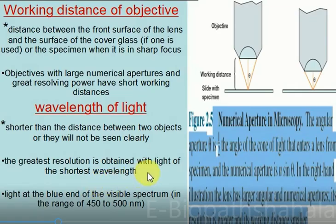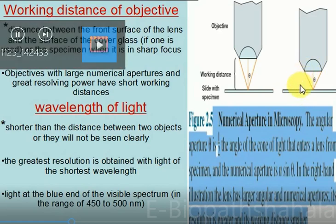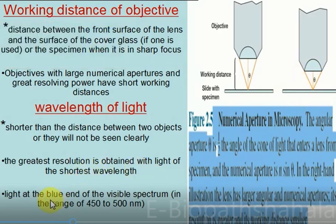Now, regarding wavelength of light: in the Abbe equation, d equals 0.5 lambda divided by n sin theta, meaning wavelength is directly proportional to working distance. A shorter working distance requires a shorter wavelength. The shortest wavelength gives the greatest resolution, and light at the blue end of the visible spectrum in the range of 450 to 500 nm is best for greater resolution.